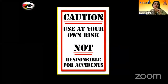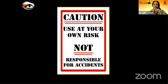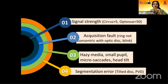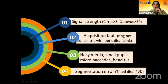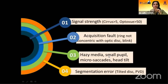We have to exercise caution when using any machine, including OCT. Factors to give importance to include signal strength — which varies for different machines — acquisition fault, the ring not concentrating with the optic disc, patient blinks, hazy media like PCO or early to moderate cataract, small pupils, and segmentation errors like PVD. All these can give false readings.